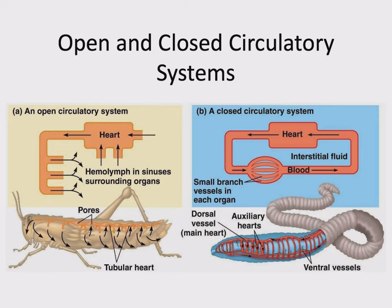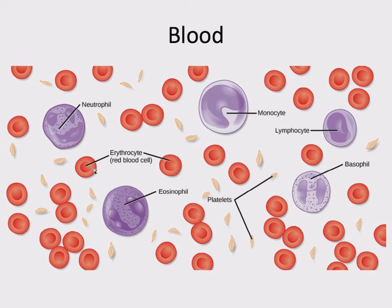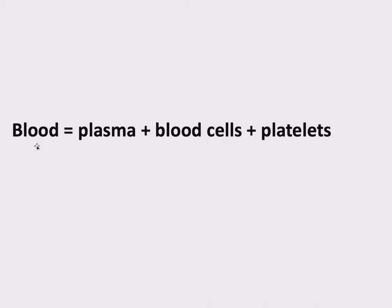There are three main components to blood: platelets, blood cells coming in all sorts of different types and sizes, and plasma — everything else that the cells are suspended in. If we're talking about whole blood, that refers to plasma plus blood cells plus platelets. All three of these things together make up blood.